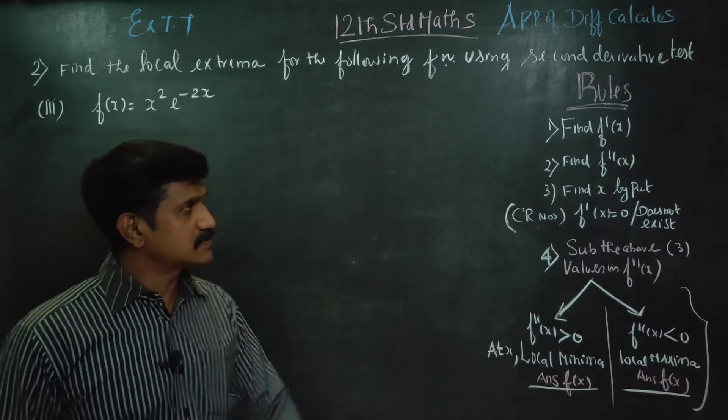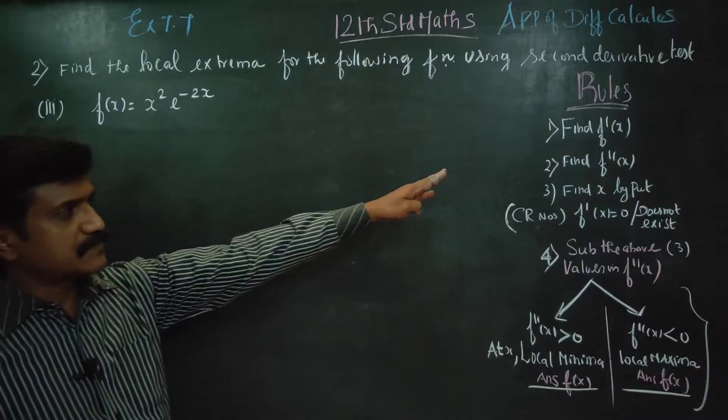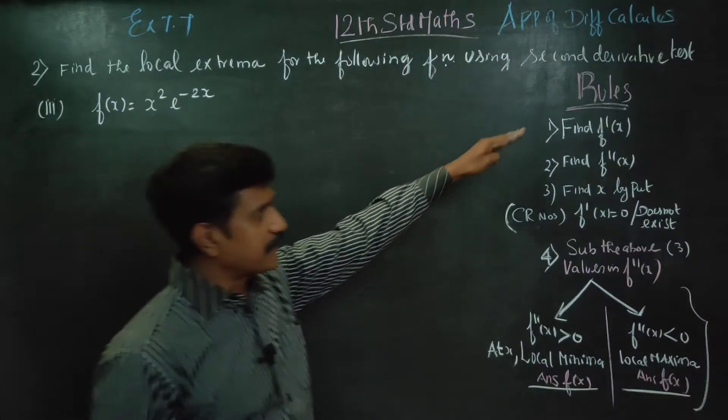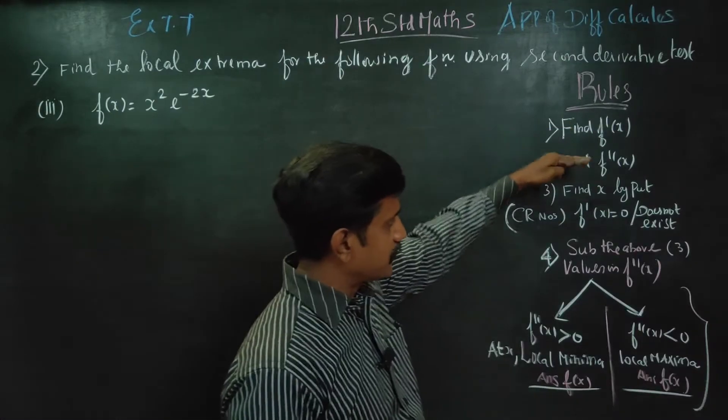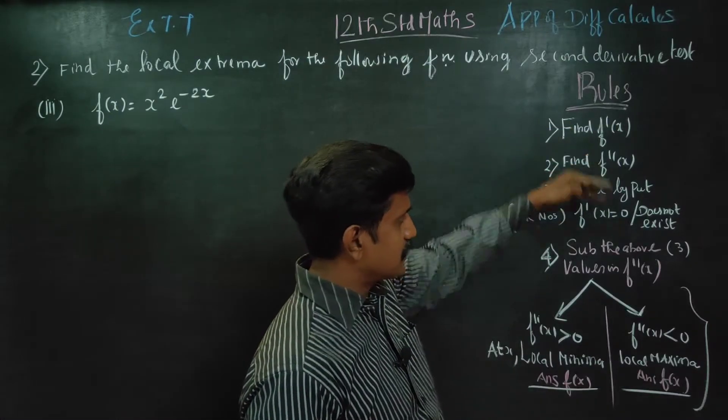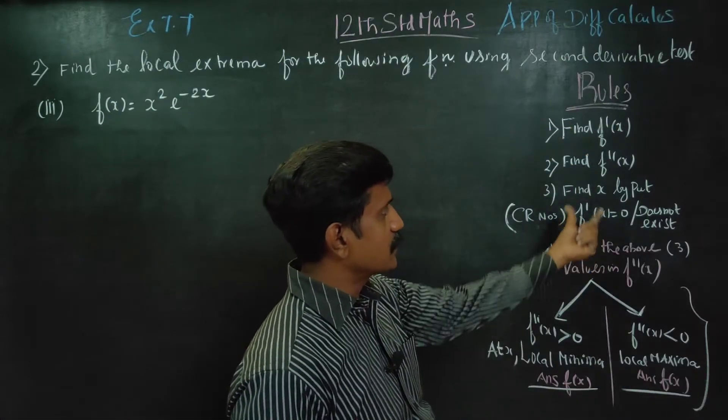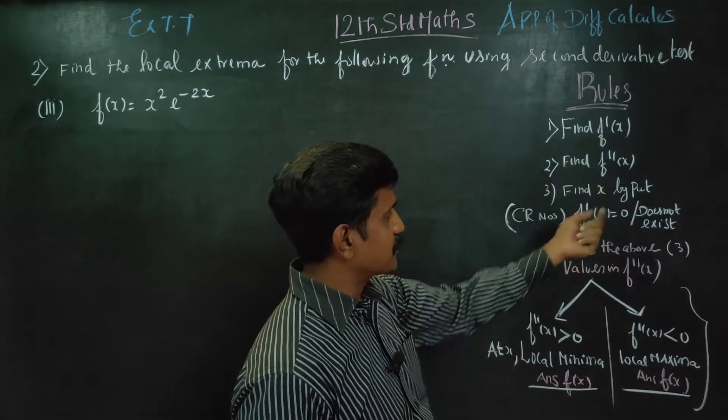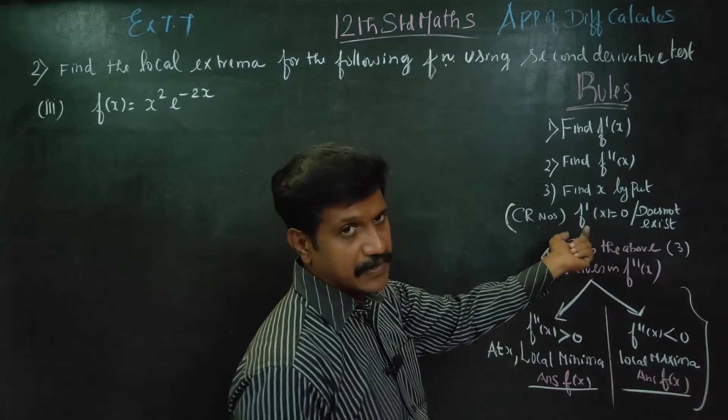Rule 1 is: first you have to find f'(x), then using f'(x) you have to find the critical number.